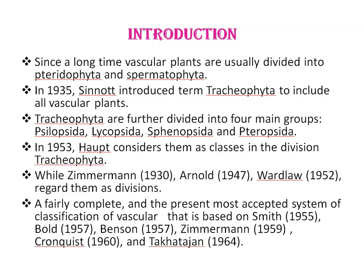Since a long time, vascular plants are usually divided into Pteridophyta and Spermatophyta. This classification was based on the assumption that Pteridophyta lacked seeds while Spermatophyta produced seeds. But the discovery of seed-bearing ferns broke down this artificial classification. In 1935, Sinhard introduced the term Pteridophyta to include all vascular plants.